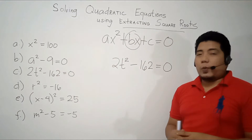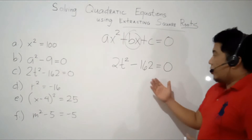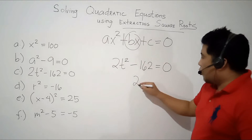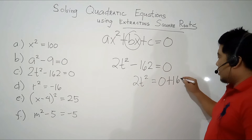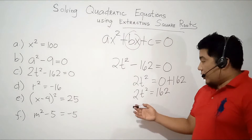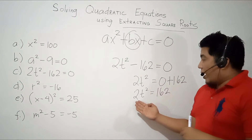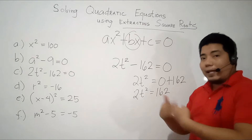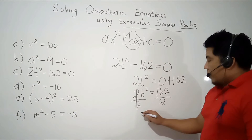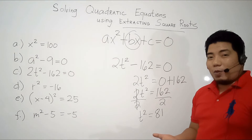For the third example, we have 2t² - 162 = 0. First, let us isolate our variable on the left side. We will transpose negative 162 to the right side, giving us 2t² = 0 + 162, so 2t² = 162. Now we cannot apply extracting square root directly because the variable is not yet fully isolated. We have to eliminate the 2 by dividing both sides by 2. By doing so, this cancels out, resulting in t² = 162 ÷ 2 = 81. Now we can apply extracting square root.